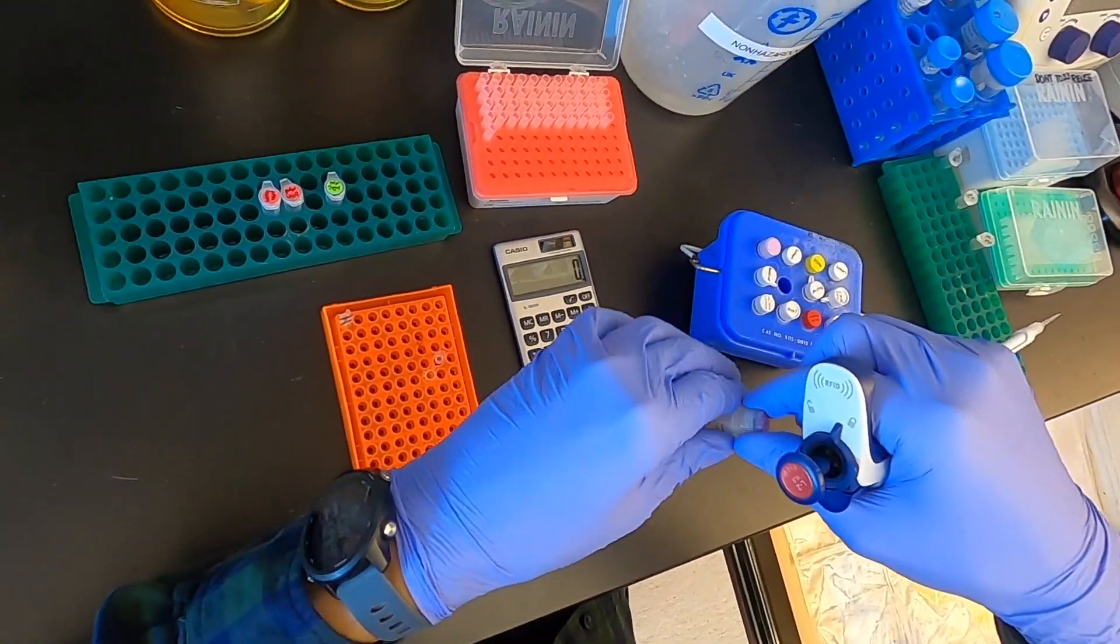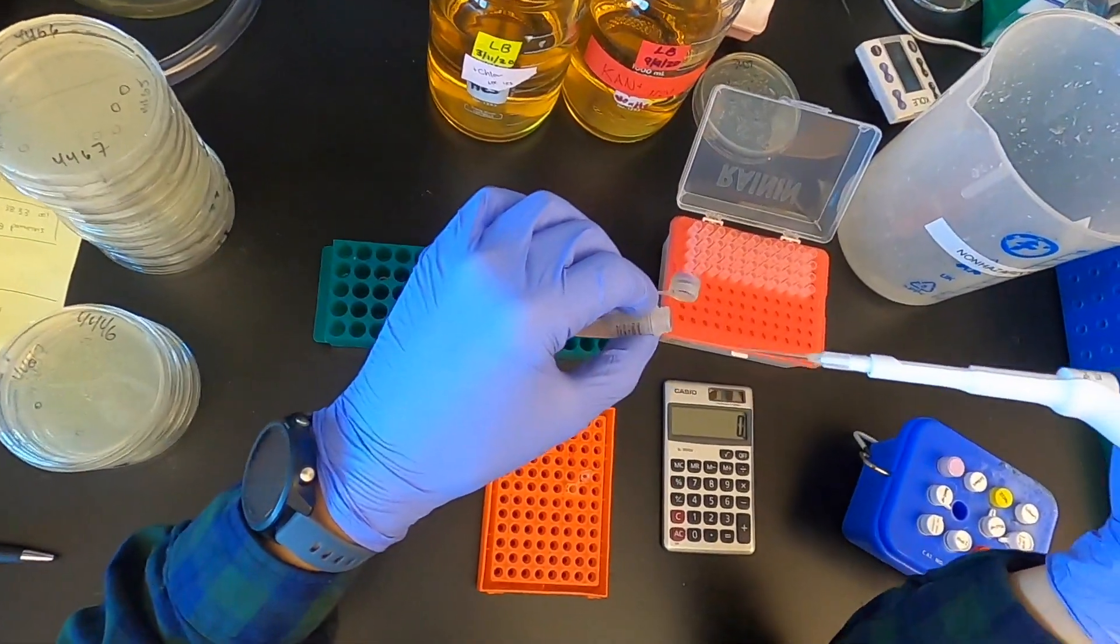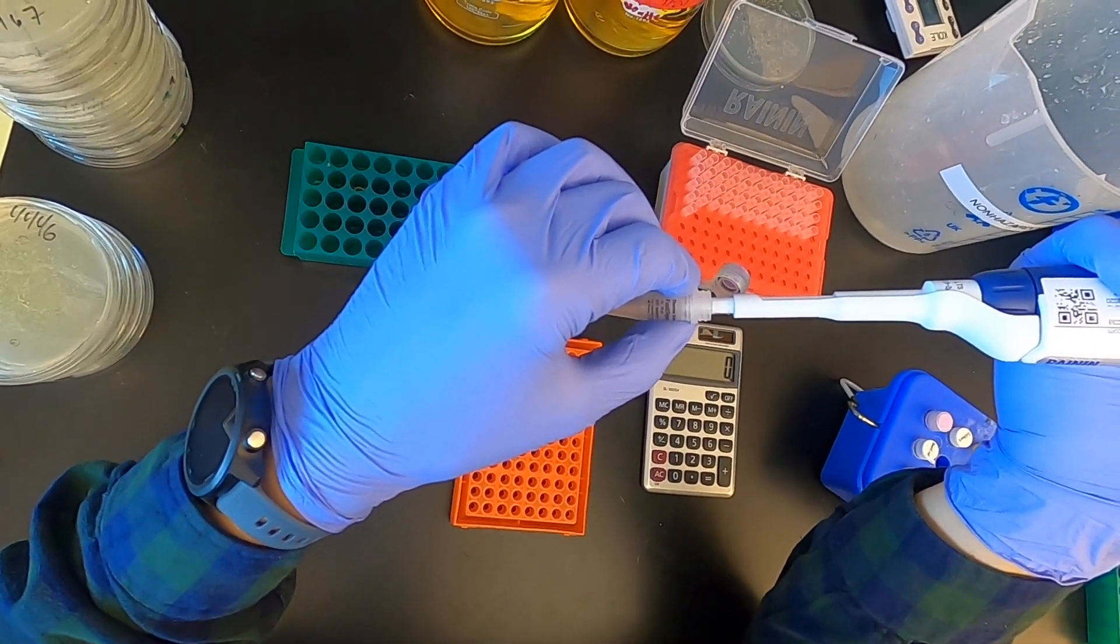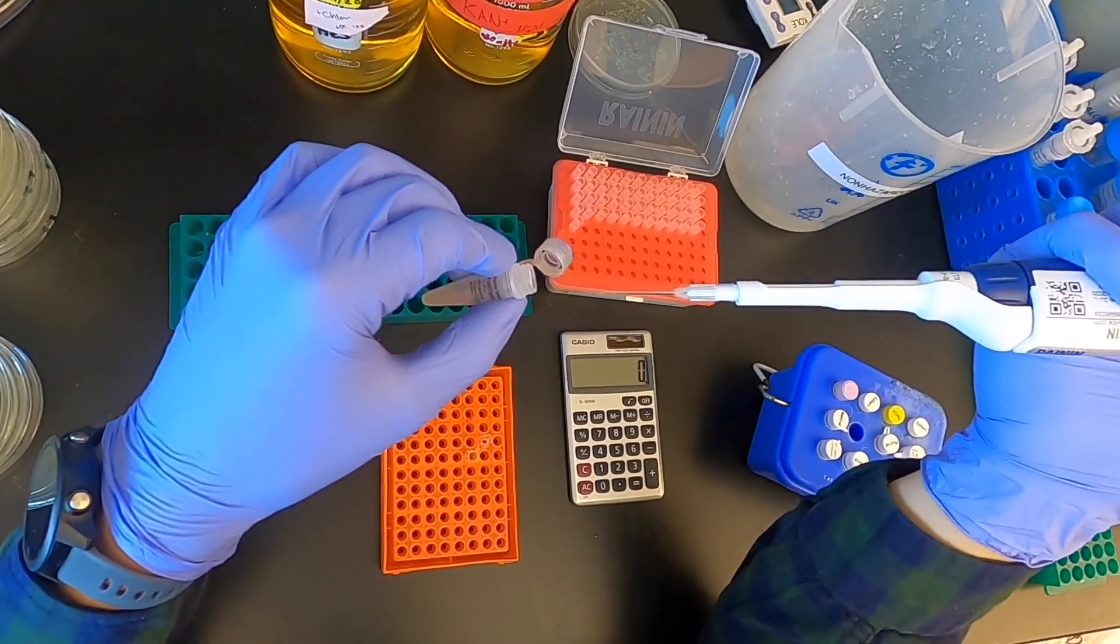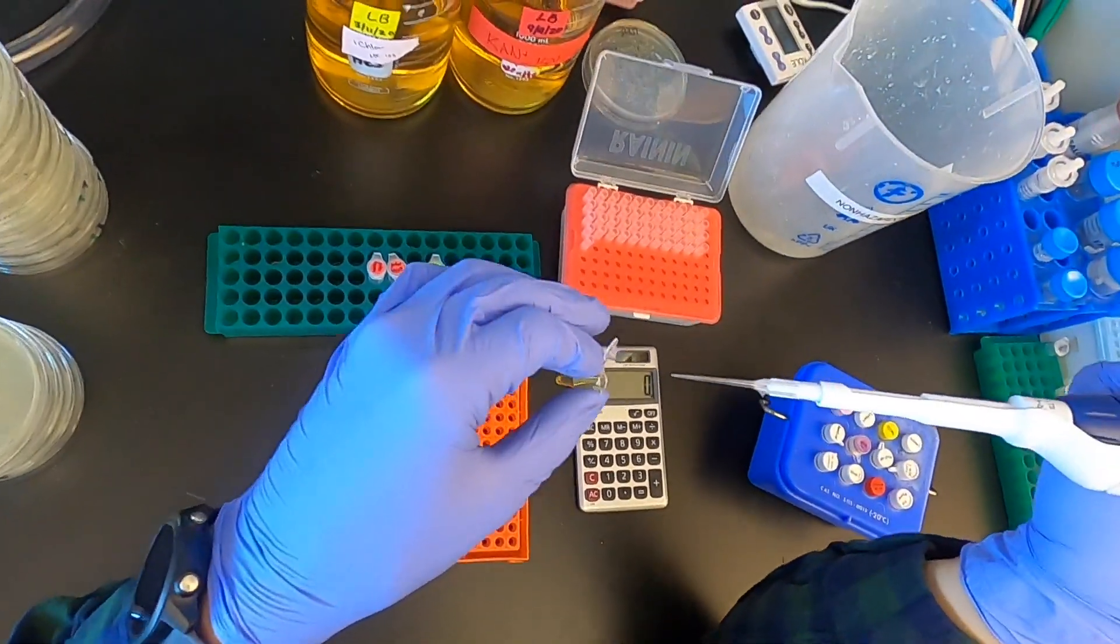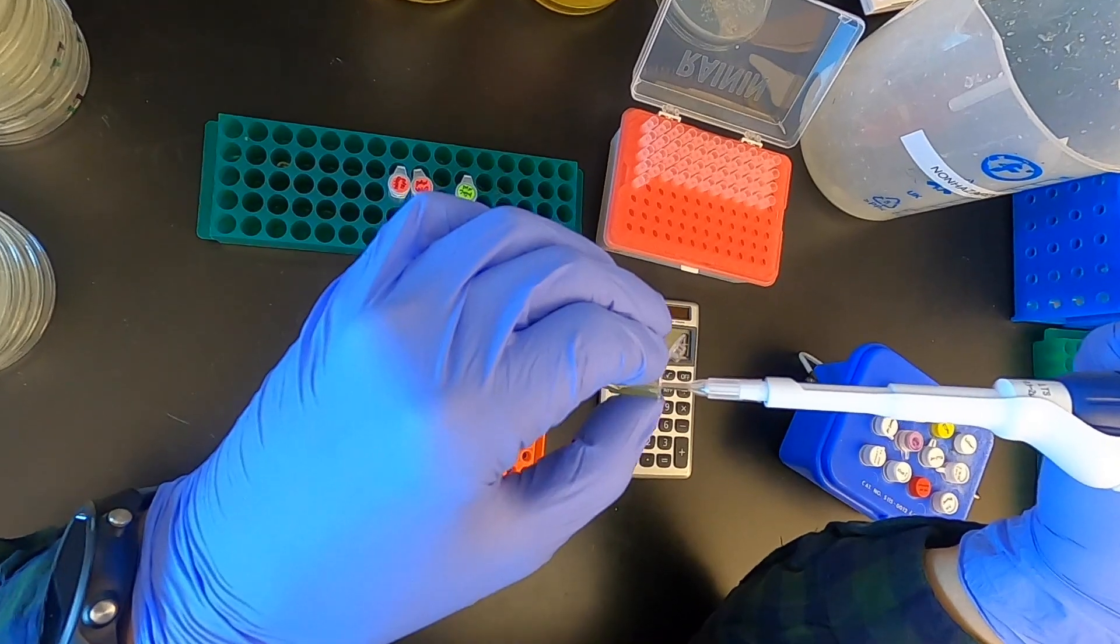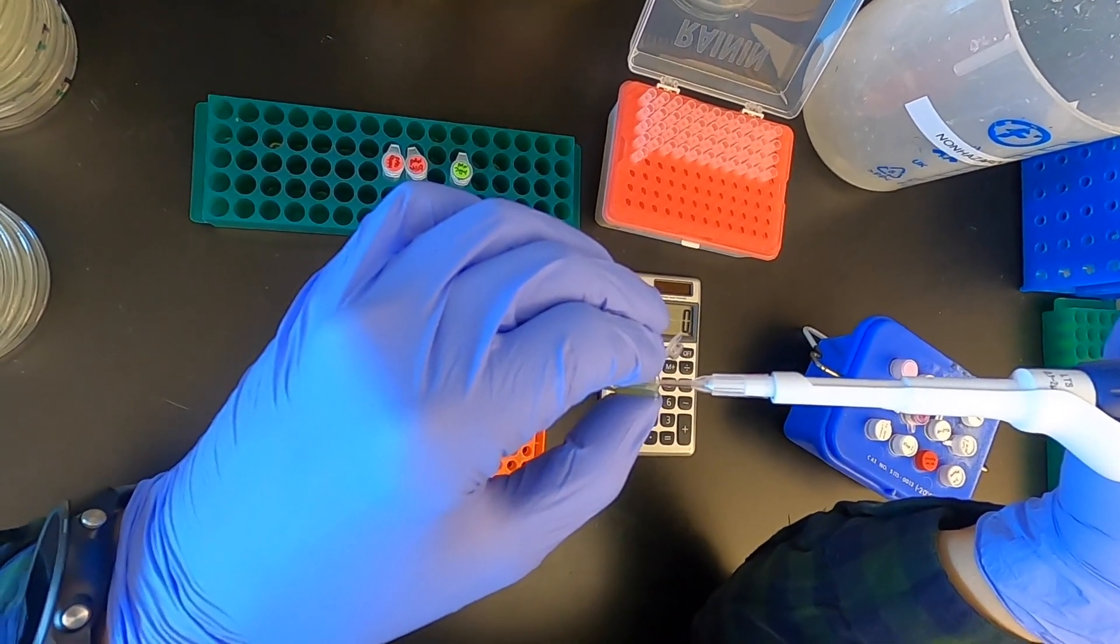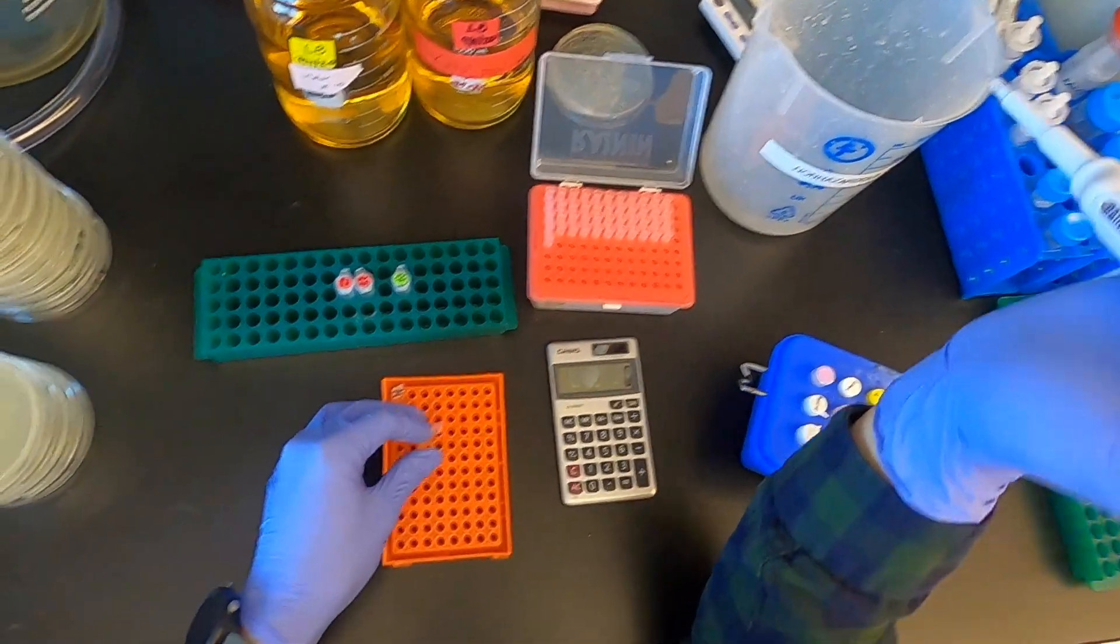Next I'll add my restriction enzyme, ESP3I. Again, visually confirming that I have 0.25 microliters in there. I'll even push to the second stop there to actually get that liquid out since it is pretty viscous.